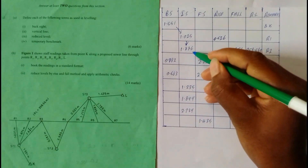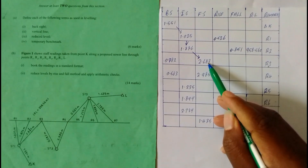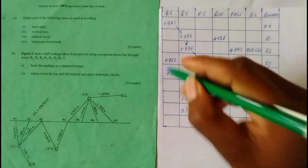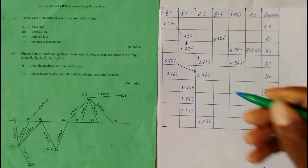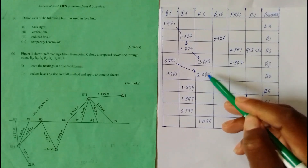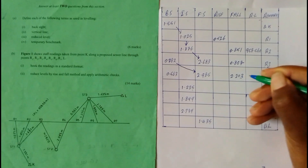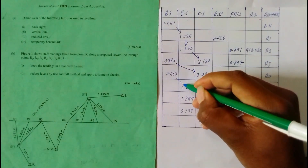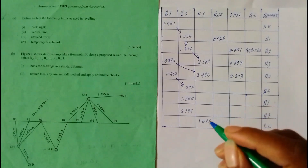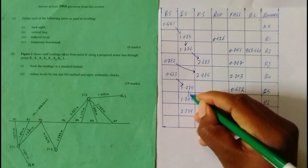Then 1.876 minus 2.683 gives a negative 0.807, which is a fall. Then 0.782 minus 2.985 gives a negative 2.203, which is a fall. Then 0.563 minus 1.235 gives a negative 0.672, which is also a fall.